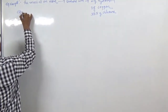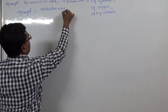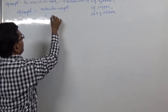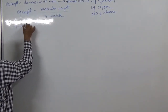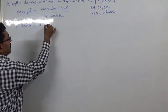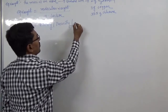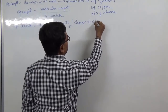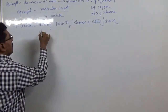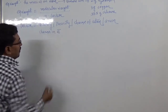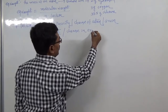Equivalent weight can be found using this formula: equivalent weight equals molecular weight divided by n-factor. The n-factor for a base is acidity, or it can be the charge of a cation or anion, or the change in electron, or the change in oxidation number for redox reactions.